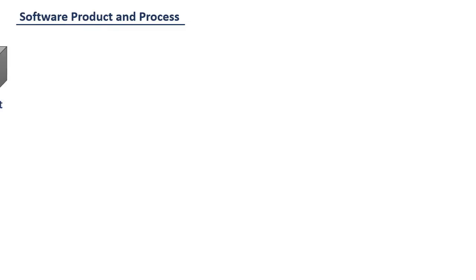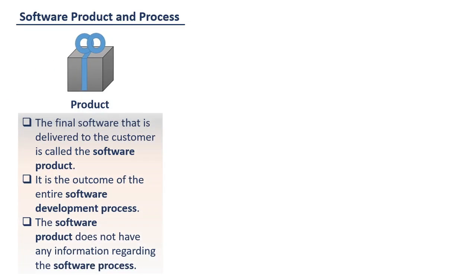Software product. The final software that is delivered to the customer is called the software product. It is the outcome of the entire software development process. It may include source code, data, user guides, reference manuals, installation manuals, specification documentation and other documentation etc.